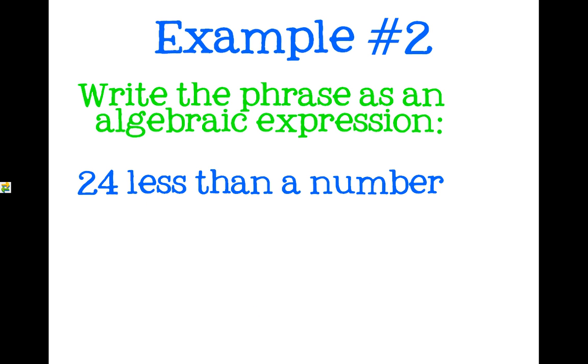Example number two, we're going to do the same thing. Translate these words into math. We have 24 less than a number. Now remember this is the one that I told you to watch out for. If you have 24 less than a number, that means you're going to take 24 away from a number. So you'll have a number minus 24. You're taking 24 less than that number.